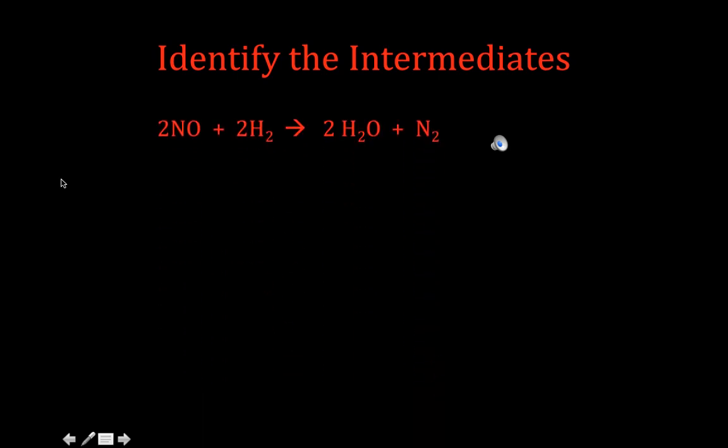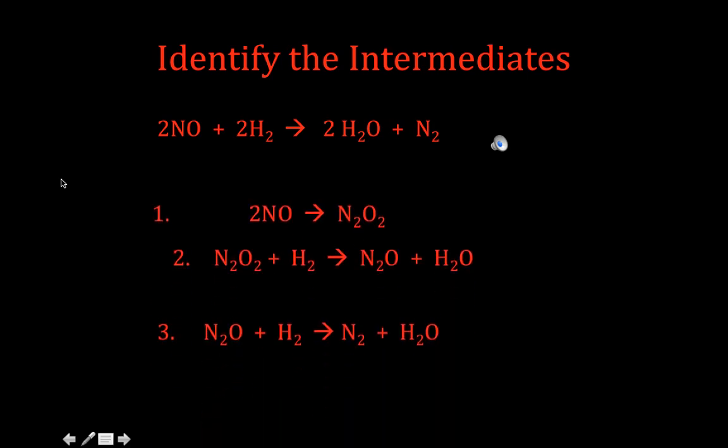So this one says, we're going to give you a mechanism. Tell me about the intermediates. So here we have step 1, step 2, step 3. And up above, we see that we have an overall reaction. Well, there's our 2NO, and it appears in the overall reaction, so it can't be an intermediate. Here we have N2O2. We don't see it as a product. In fact, we see it used up in the next step, so it's got to be an intermediate.